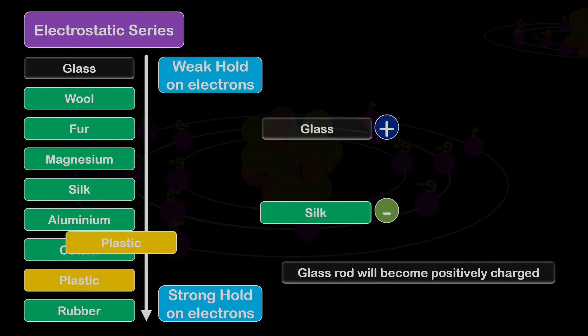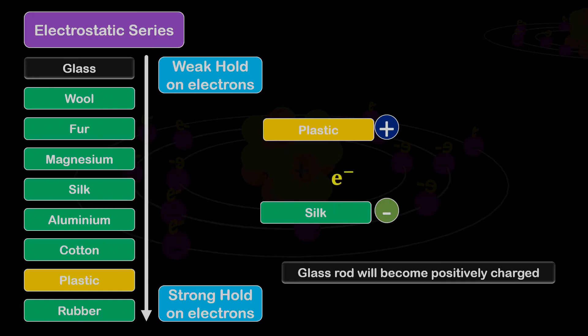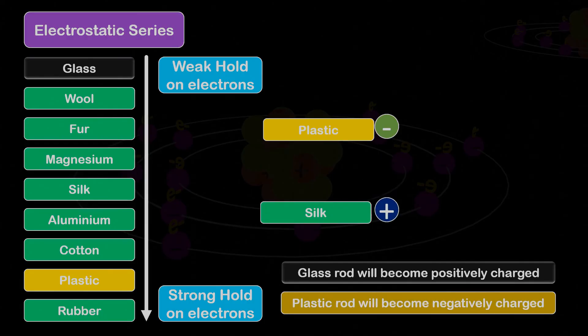And if we rub plastic and silk, the silk atoms will give their electrons to the plastic, leaving the plastic with a negative charge, while the silk with a positive charge, and the plastic rod will become negatively charged.